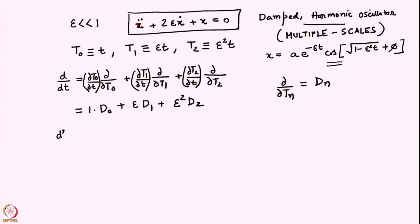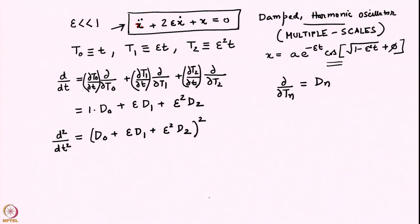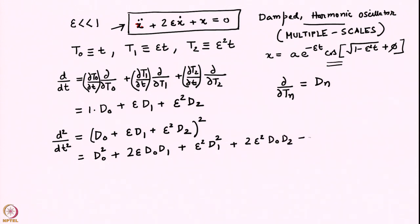We want the second derivative in our equation. That is the square of the operator d/dt. Opening it up, we get d0² + 2·epsilon·d0·d1 + epsilon²·d1² + 2·epsilon²·d0·d2 + higher order terms. We stop writing further because these will be higher powers of epsilon.